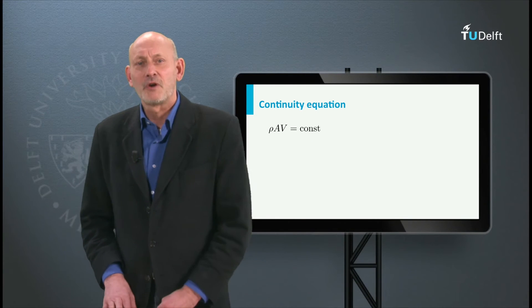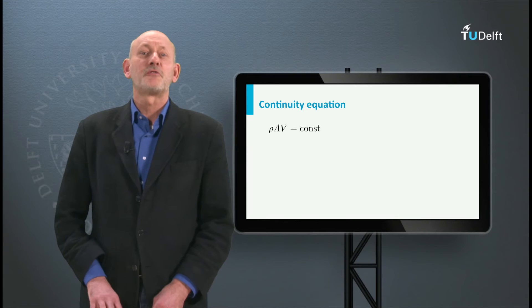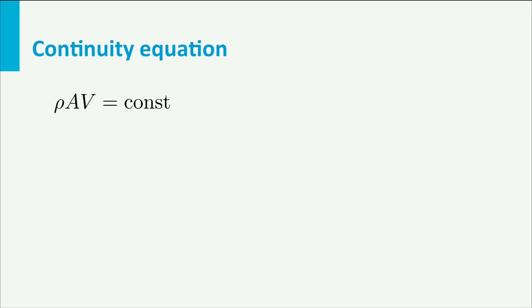Let us concentrate for a moment on the continuity equation for compressible flow. Rho AV is constant. This can also be written as the natural log of rho plus the natural log of A plus the natural log of V is equal to the natural log of a constant. And when we differentiate this equation we get d rho over rho plus dA over A plus dV over V equals zero.